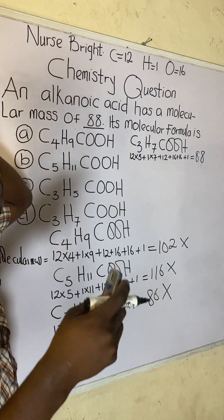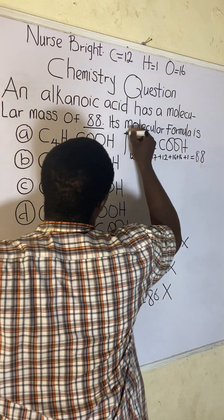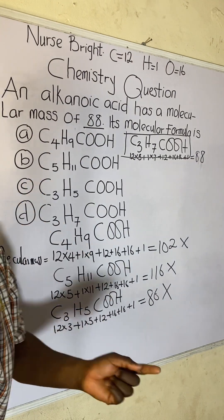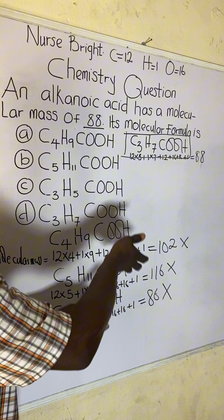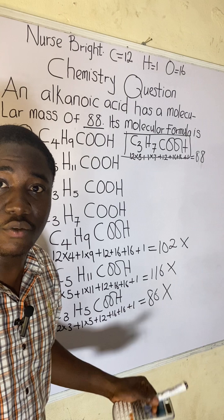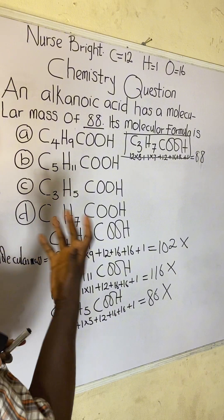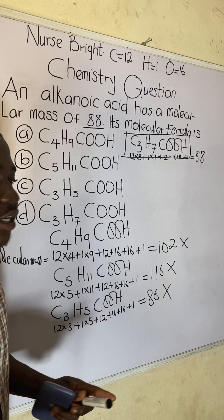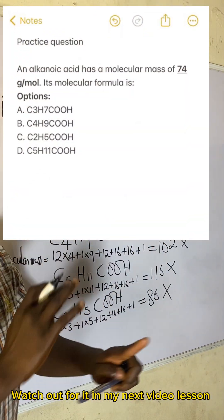So this tells you that C3H7COOH is the molecular formula of this alkanoic acid whose molecular mass is 88. The answer is option D. If you are given options, simply calculate the molecular masses of each and find the one that matches the number given in the question. That's how to solve it — it's actually very easy.